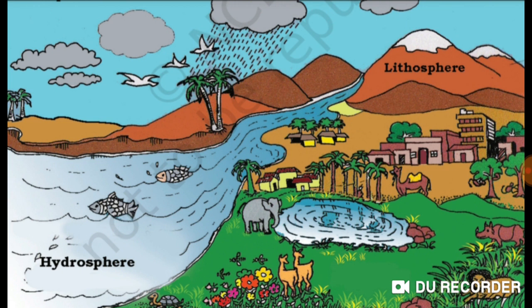The solid portion of the earth on which we live is called the lithosphere. The gaseous layer that surrounds the earth is called the atmosphere, where oxygen, nitrogen, carbon dioxide and other gases are found. Water covers a very big area of the earth's surface, and this area is called the hydrosphere.